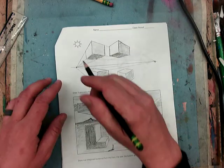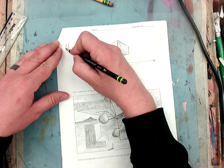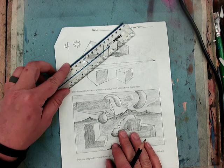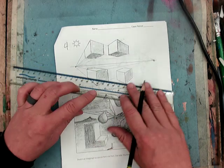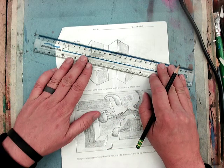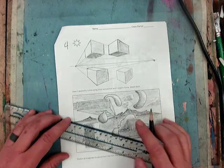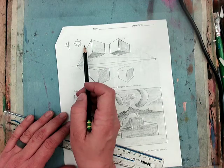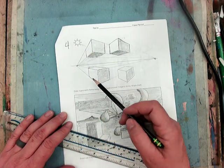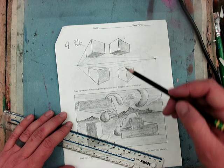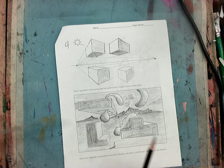Number four, cubes in two-point perspective. So we want one set of orthogonals going to the left on each box, one set going to the right. And, again, consistent shading. So the sides that are being hit by the light, we want it to be light. The sides that are not, on the bottom, we want it to be dark.